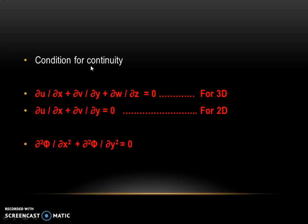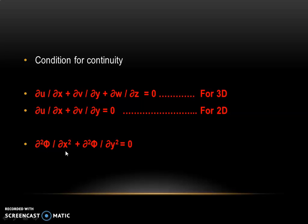Next is the condition called continuity. For a three-dimensional flow, the continuity equation is ∂u/∂x + ∂v/∂y + ∂w/∂z = 0, where u, v, and w are velocity components in the x, y, and z directions respectively. For two-dimensional flow, only u and v exist, and w = 0. In terms of velocity potential, the continuity condition becomes ∂²φ/∂x² + ∂²φ/∂y² = 0.